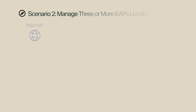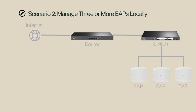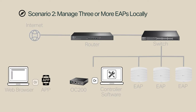To manage three or more EAPs locally, connect your router to the Internet, a switch to the router, and EAPs to the switch. Connect your controller — either an OC200 or a PC with controller software — to the local network. You can use either a web browser or the Omada app to manage the EAPs centrally in controller mode.